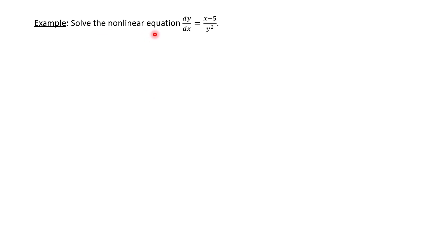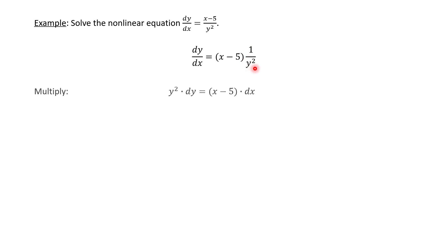Let's try this first example. We're going to solve this nonlinear equation: dy/dx equals (x minus 5) over y squared. Notice this does fit our format for a separable equation — the derivative is by itself, the right side is a product of a factor that only depends on x and another factor that only depends on y. So our first step is to multiply both sides by dx and then multiply by y squared, so y squared moves over to the left side.